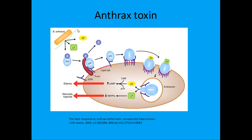Here is the anthrax bacteria. The toxin is really composed of three subunits: PA (protective antigen), LF (lethal factor), and EF (edema factor). The names tell you what they do — except for protective antigen, which actually has no known protective effect. Think of it as 'pore antigen,' because it forms pores in the cell membrane that allow EF and LF to enter.